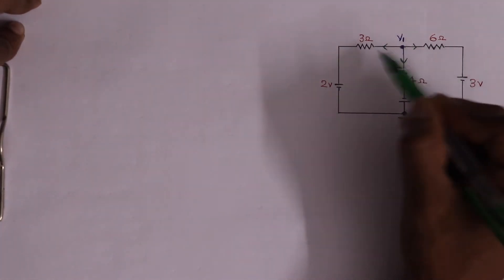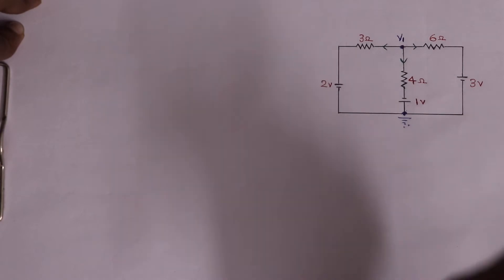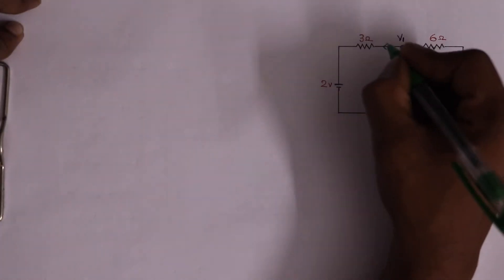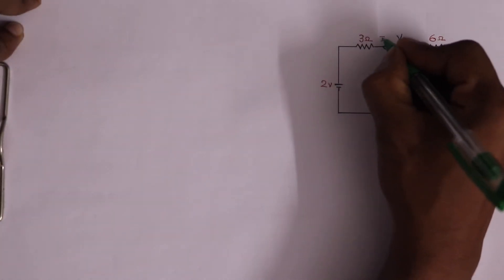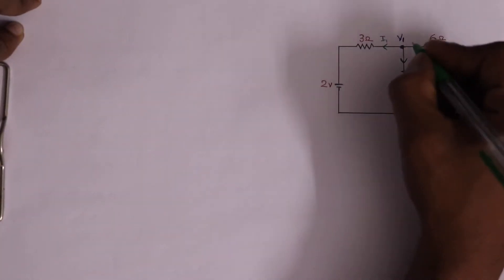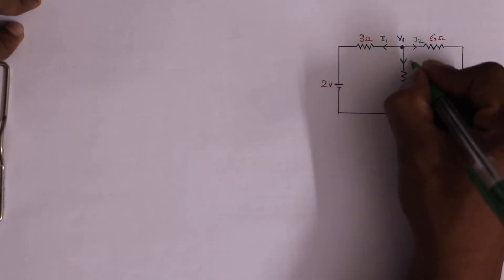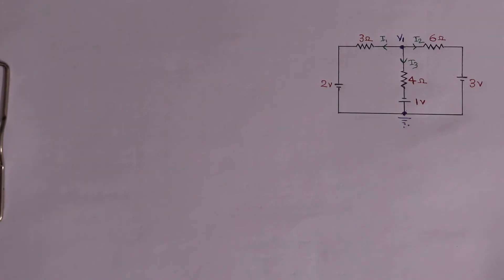Now, we are going to get the direction of the current and the value. We are going to label them I1, I2, and I3.